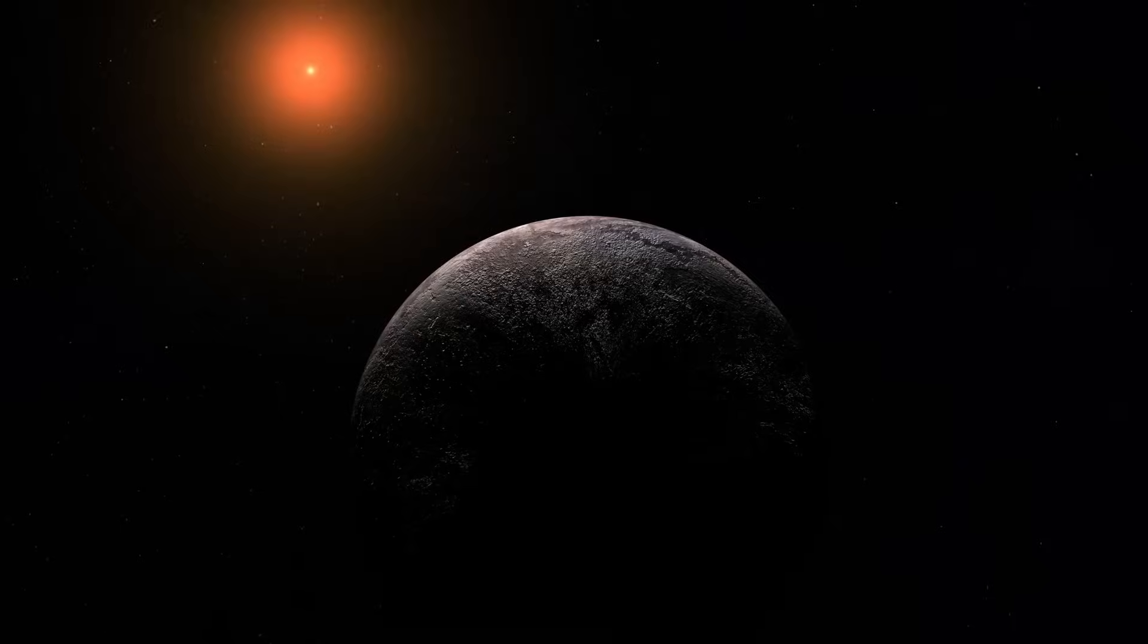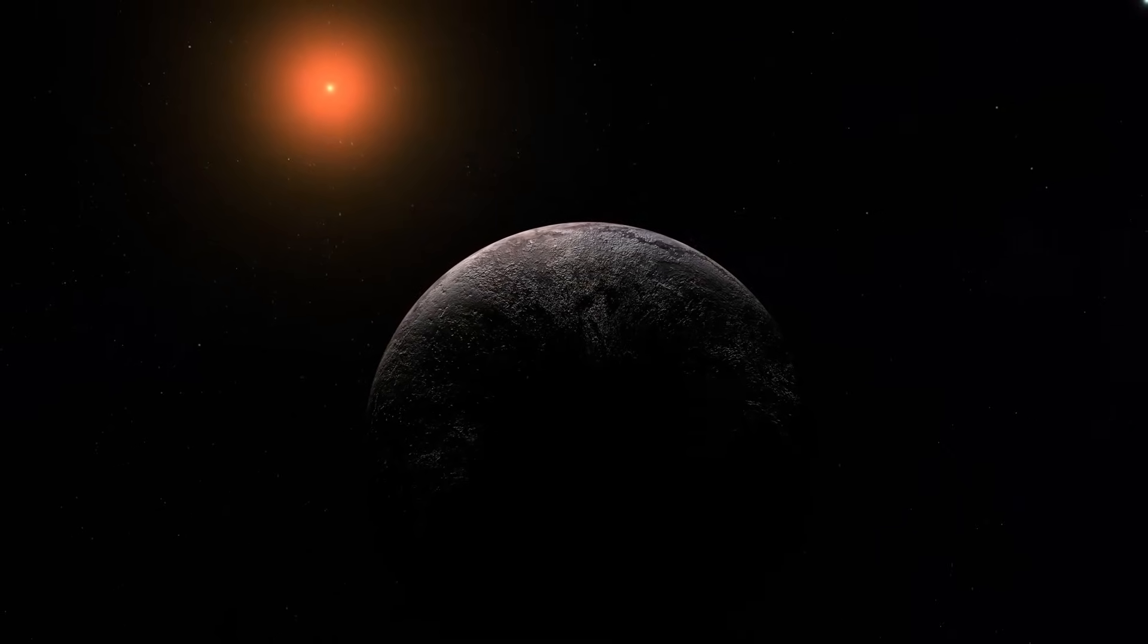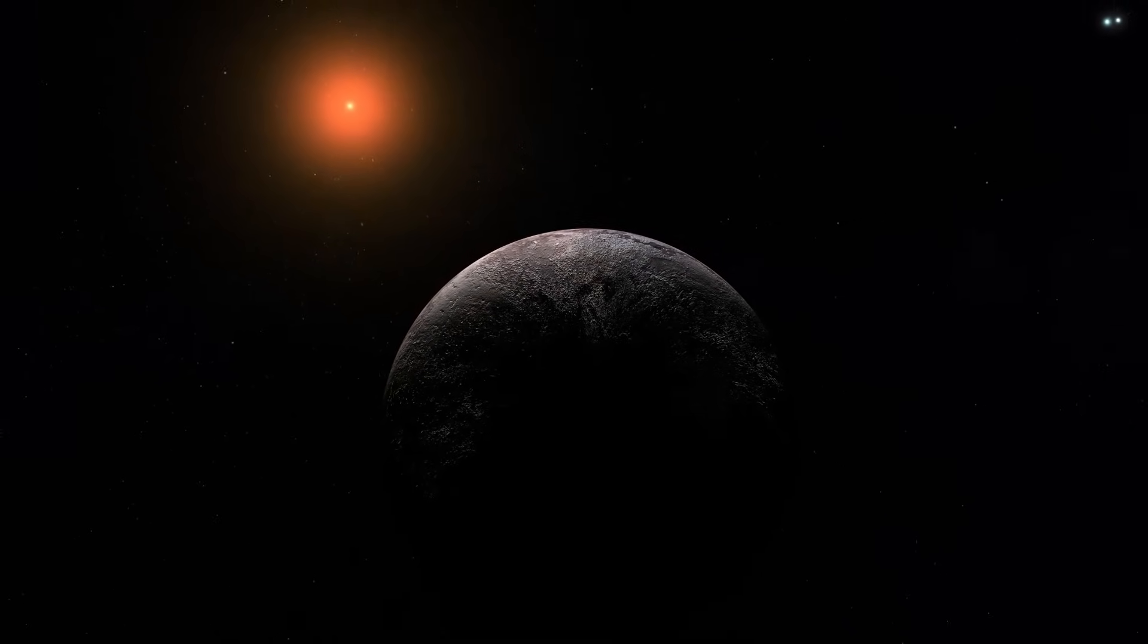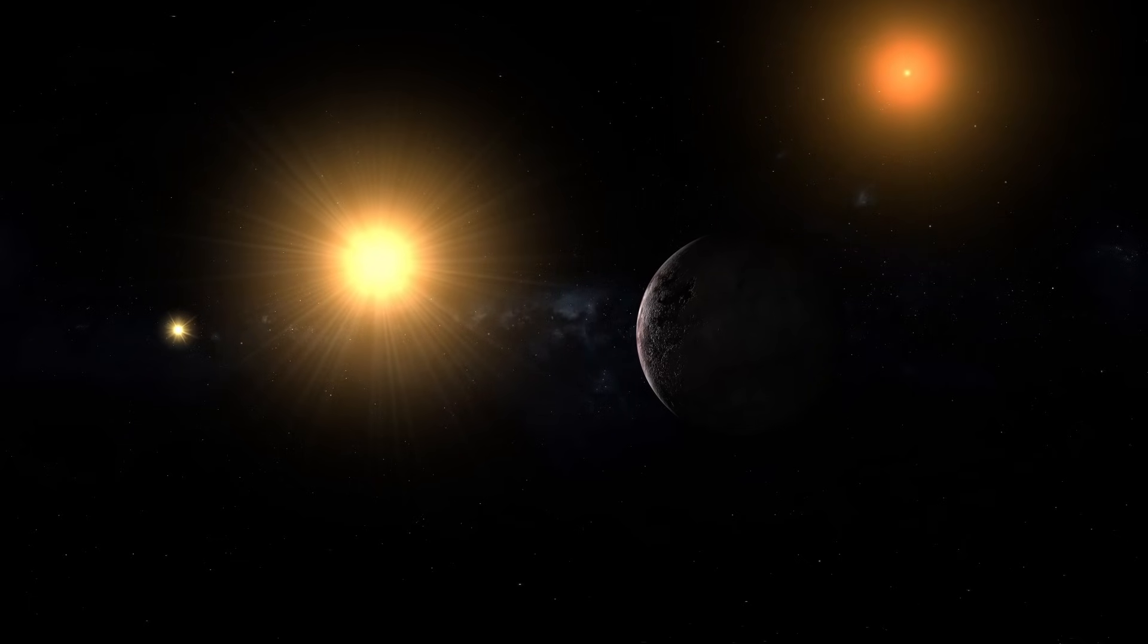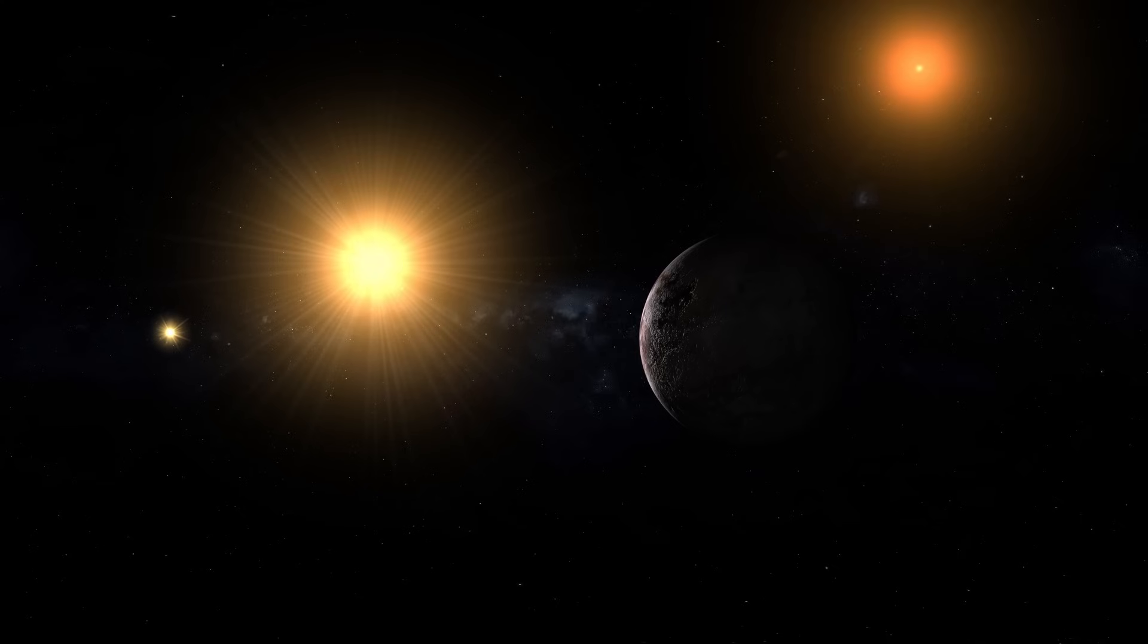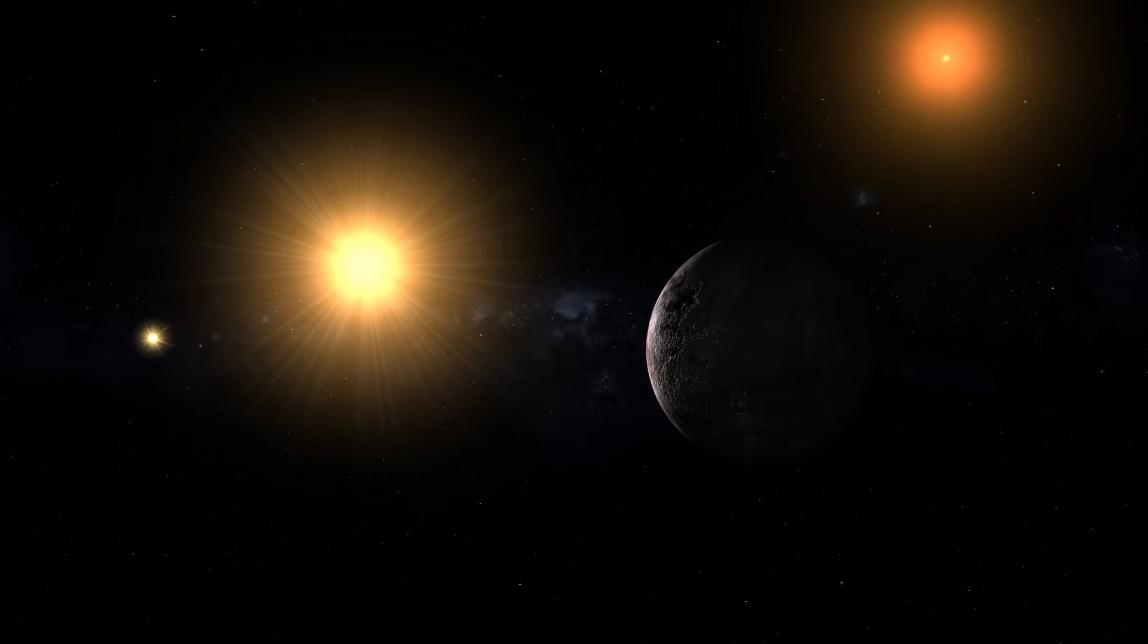In other words, Proxima Centauri completes one revolution around Alpha Centauri A and B every half a million years. Proxima Centauri is so far from the central system that it is the closest star to the Sun. These stars make up a triple star system that orbits harmoniously without colliding with each other, and thanks to all this, we have been able to develop the necessary conditions to host planets, but we'll talk about this later.